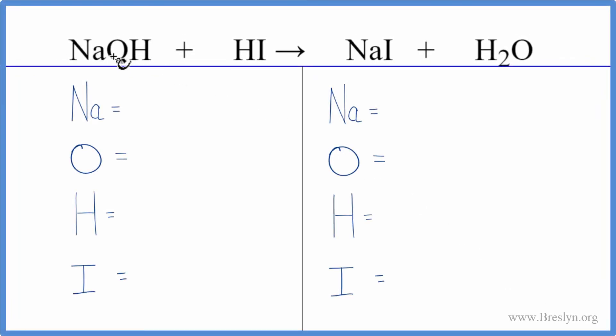In this equation, we have NaOH plus HI. That's sodium hydroxide plus hydroiodic acid. This is a base and this is an acid. So this is a neutralization reaction.